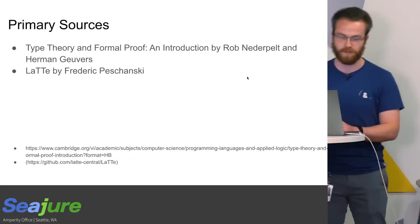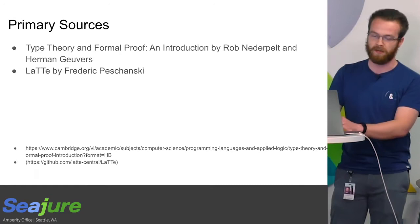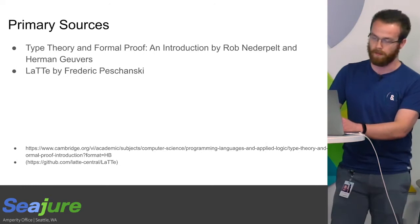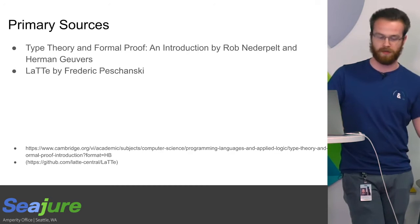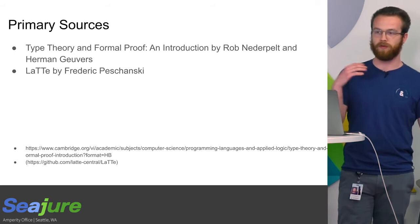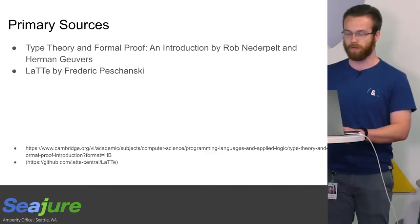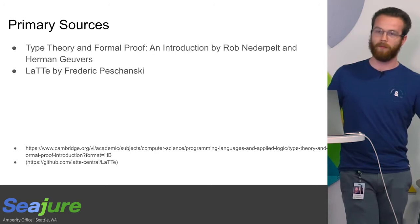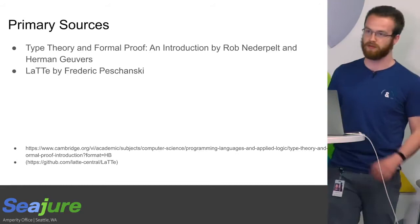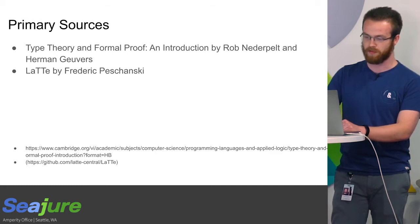The two primary sources are this book, 'Type Theory and Formal Proof' — if you want to come up after and take a look, you're very welcome to. And then 'Latte' by Frederick Pishkonski, which is a pretty elegant proof system. It leverages a lot of things native to Clojure as a functional programming language in order to avoid having to reimplement things you need to get your proof system up and running. The idea of being able to define a theorem is analogous to defining a function in Clojure and is actually implemented on top of Clojure's function definitions, so you don't have to manage all the definitions of your theorems in your own special way.